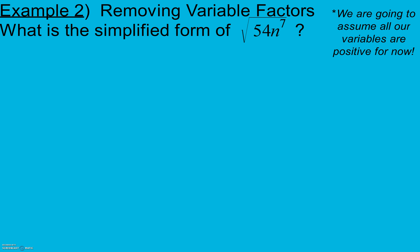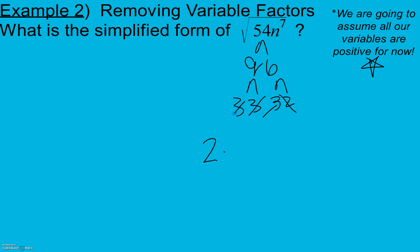In example 2, we do the same thing except we have variables inside our square roots. We'll assume all variables are positive for now, because otherwise we'd have to worry about square roots of negative numbers. Here I'll break down 54 as 9 and 6. 9 is 3 times 3, and 6 is 3 times 2, giving me a 2 and three 3s, which gets us back to 54.